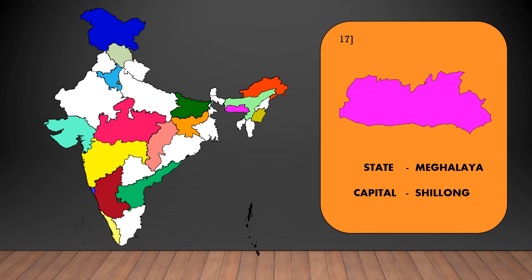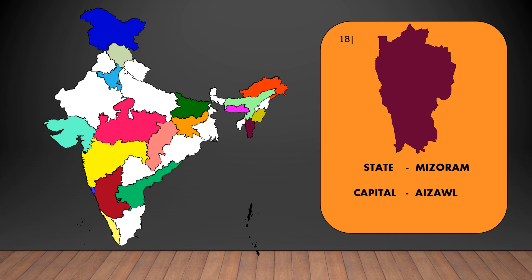The capital of Meghalaya is Shillong. The capital of Mizoram is Aizawl.